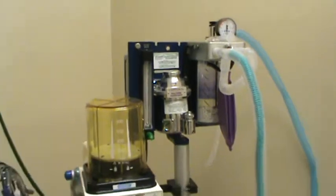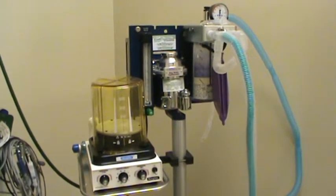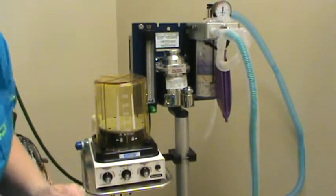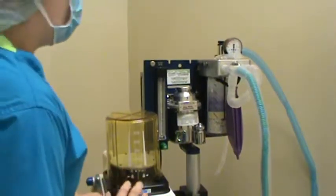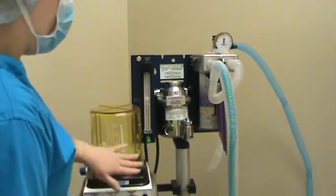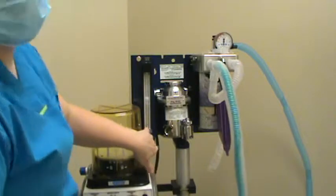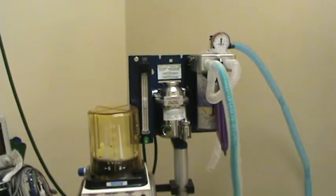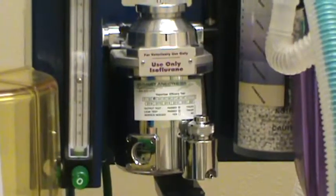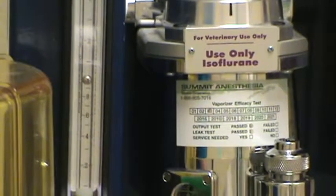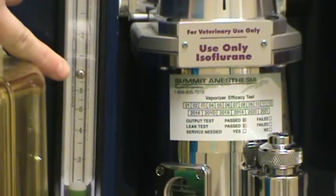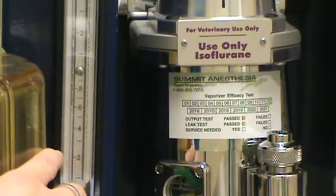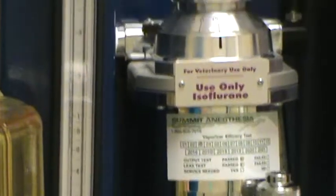Here we are at our anesthetic machine. First thing I'm going to do is verify that the oxygen is working. I'm going to turn the flow meter here. The flow meter is on and right here at about one, so we have oxygen flowing and that's great. I'm going to turn that off and zoom back out.